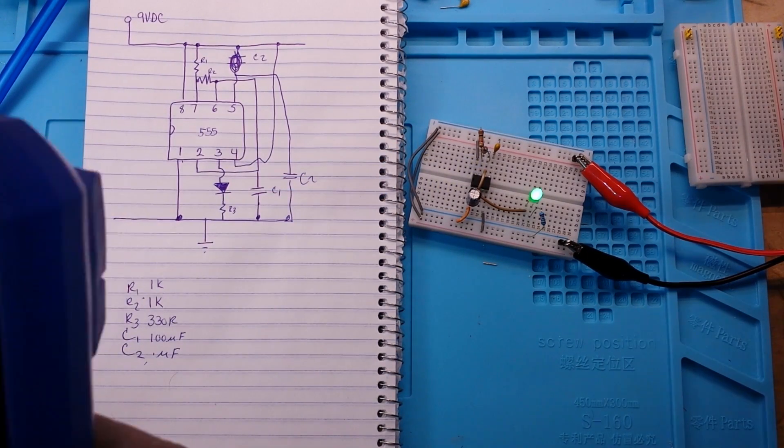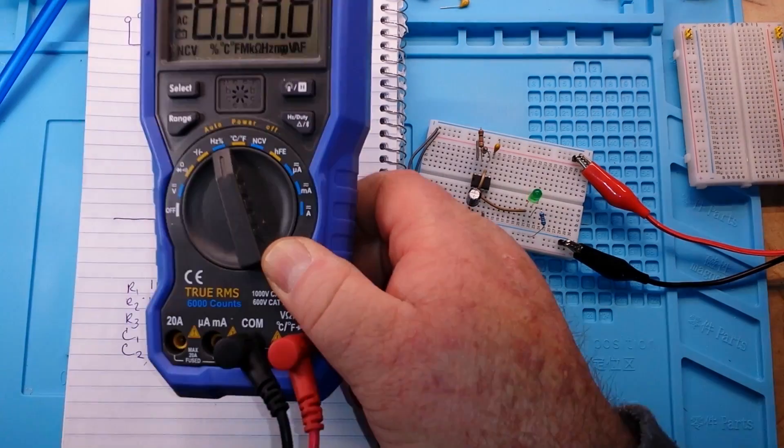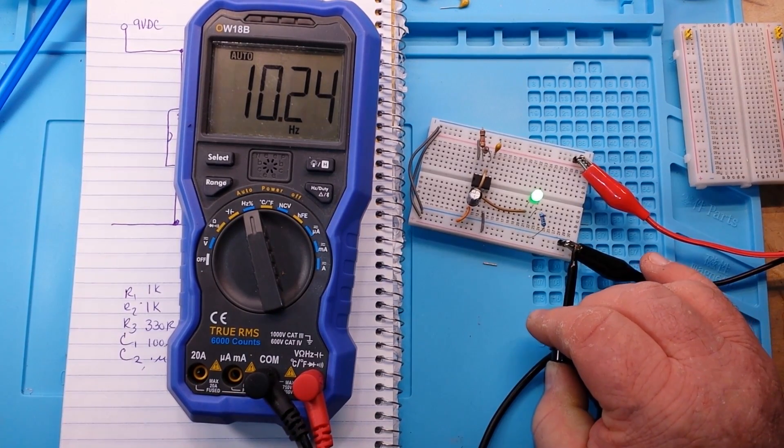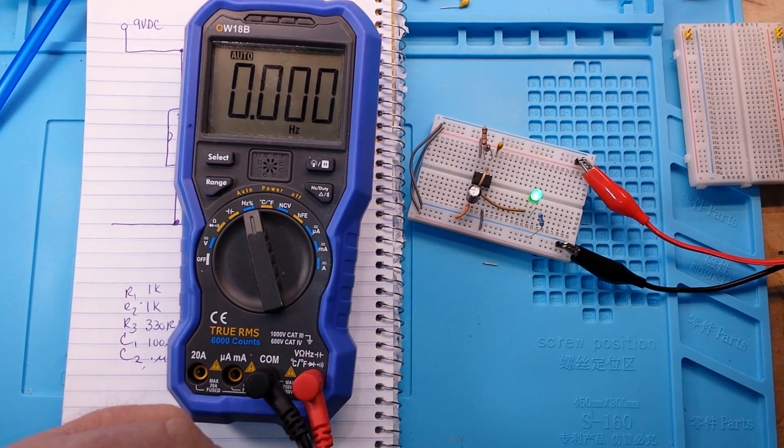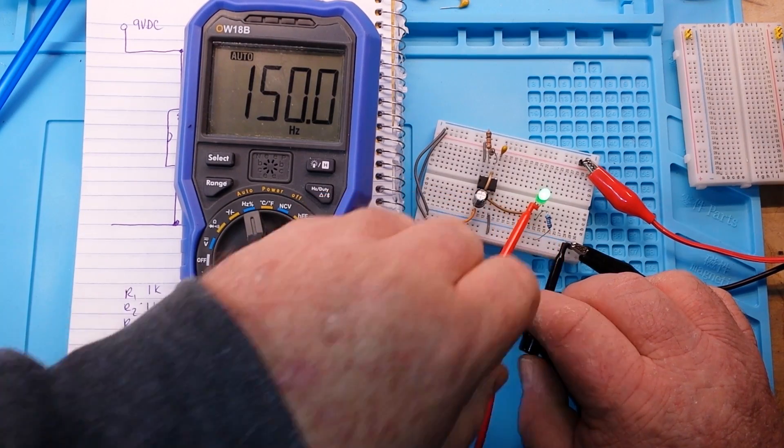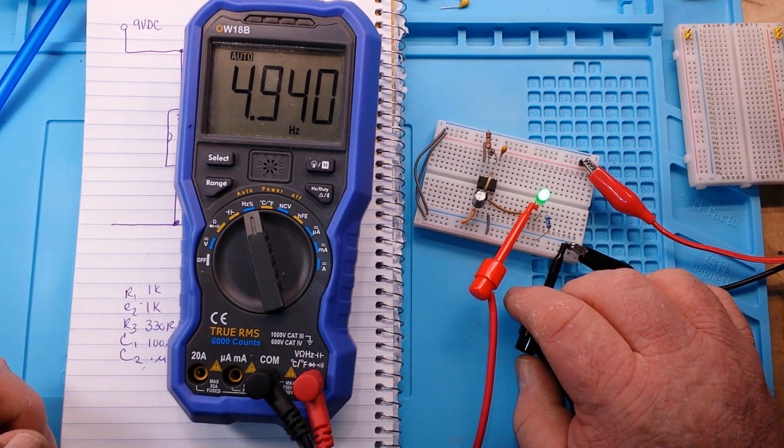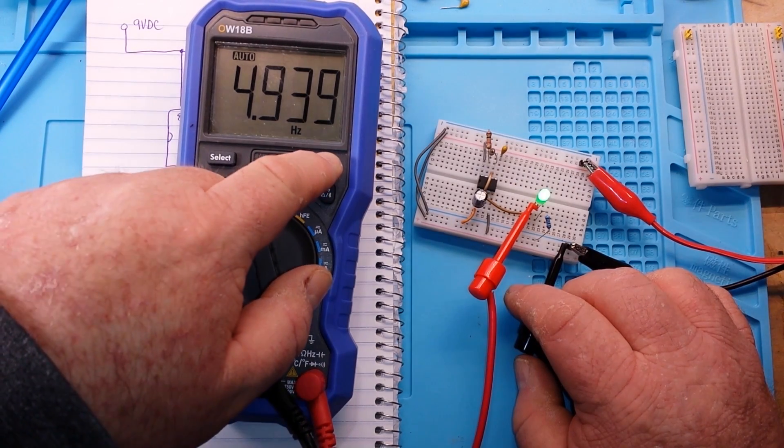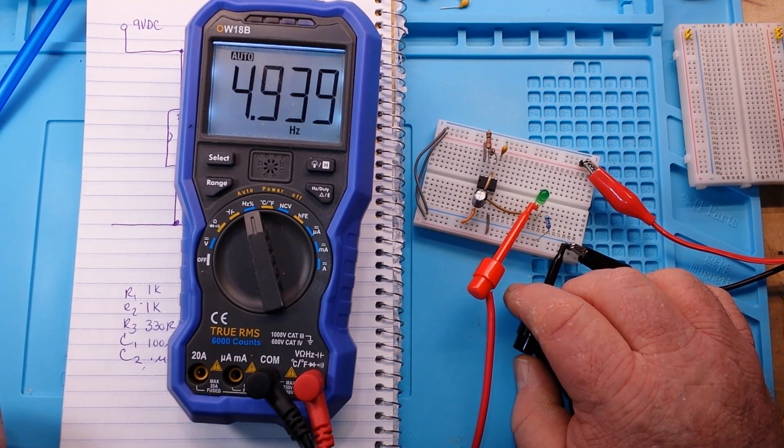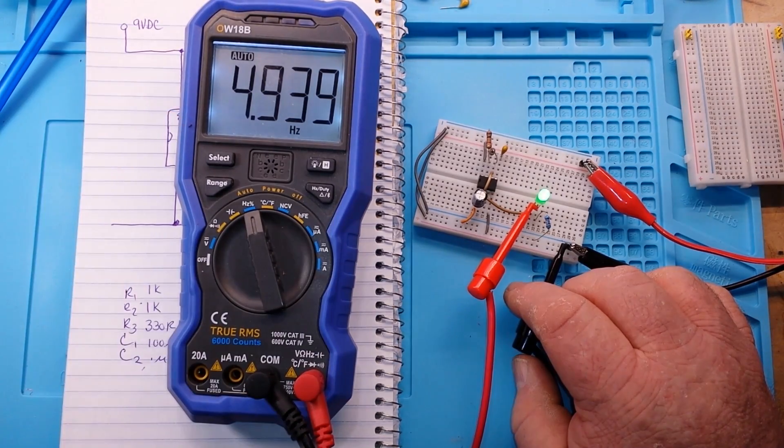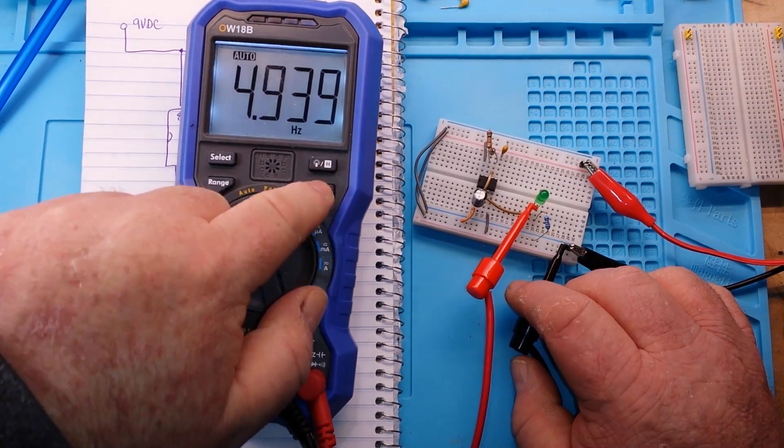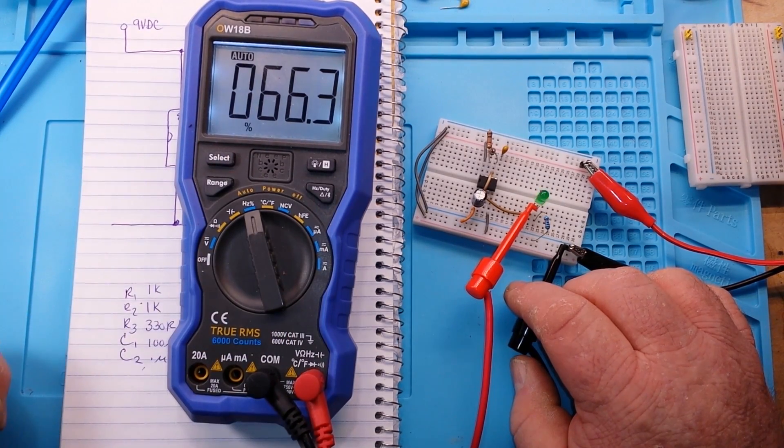Let's check our frequency here. The one thing I want to talk about is that because both of these resistors are the same, we are going to end up with a duty cycle here of 0.66, which is about two-thirds of the charge of the capacitor, which is one timing cycle. There we are at 4 Hertz. The important thing I want to show you is the duty cycle here which is 0.663.